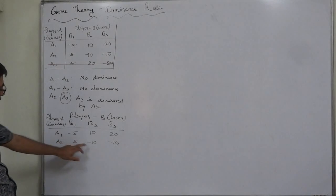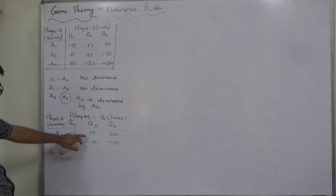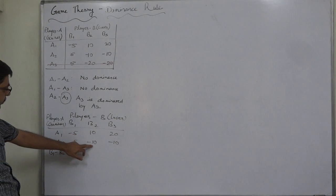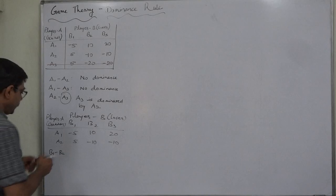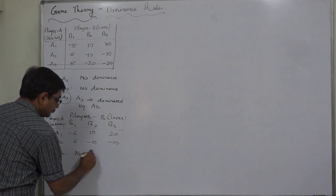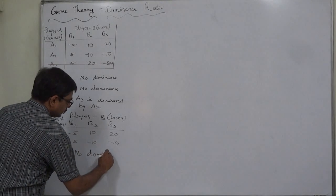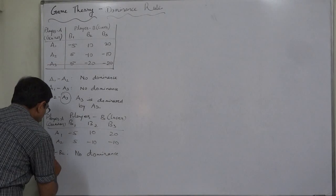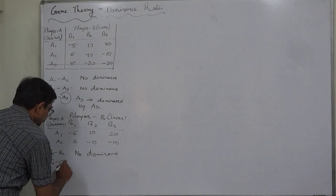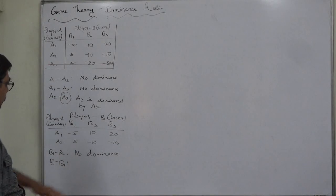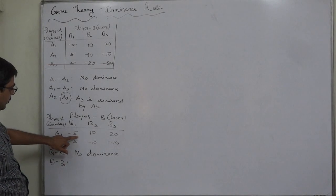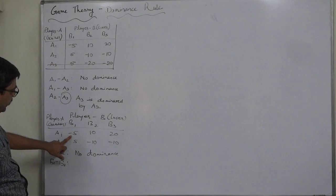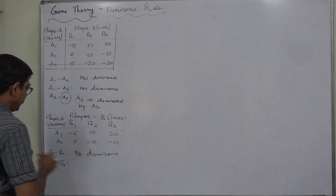Comparing B1 and B2: the values are 10 and minus 5, and minus 10 and 5. In this comparison B1 dominates, but in the other comparison B2 dominates — so no continuous dominance between B1 and B2. Similarly, comparing B1 and B3: in the first case B1 dominates, in the second case B3 dominates. Again, no dominance established between B1 and B3.